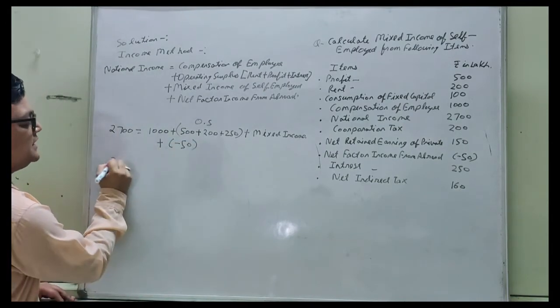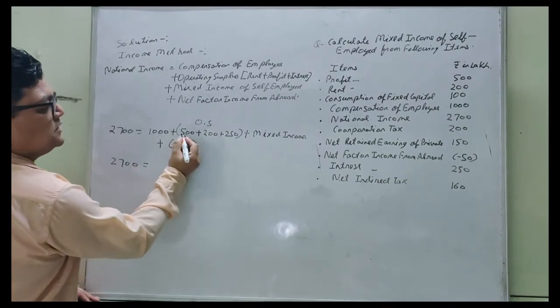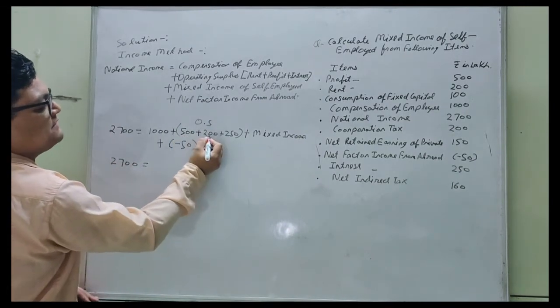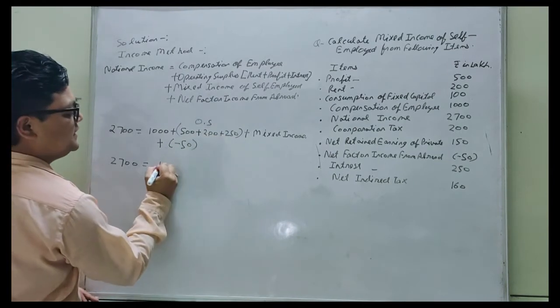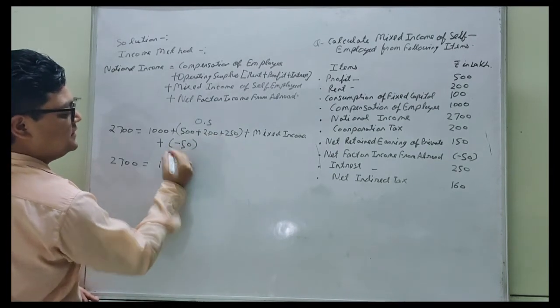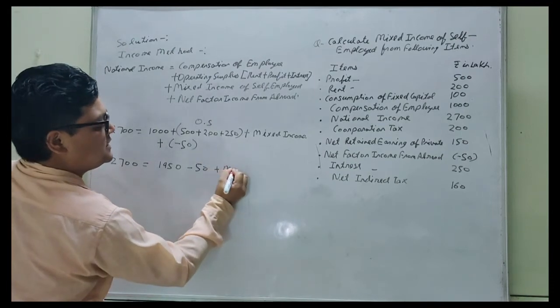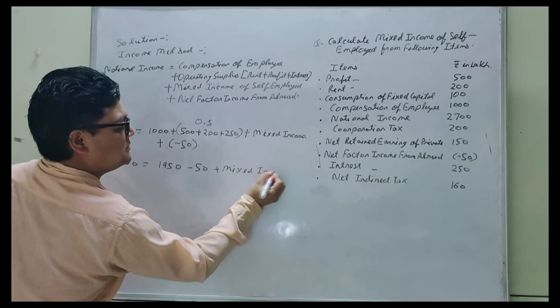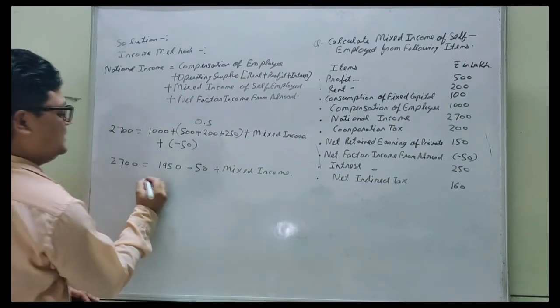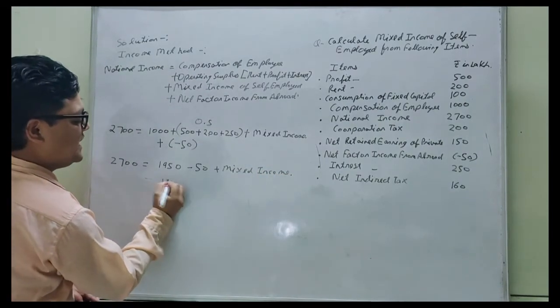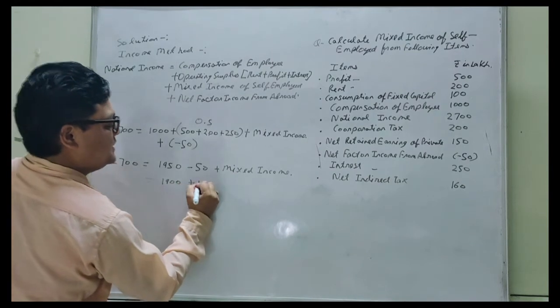Now we will calculate it. 2700 equals 1000 plus 500 plus 200 plus 250, which is 1950, minus 50, plus mixed income. So it will become 1900 plus mixed income.